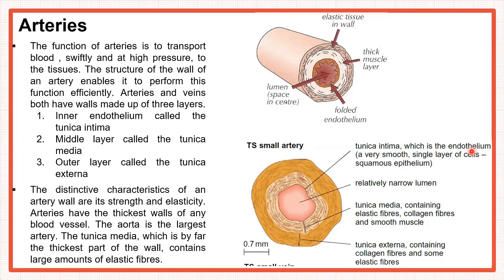The main function of an artery is to transport oxygenated blood very swiftly and under high pressure to the tissues. The structure of the wall enables it to perform this function efficiently. All blood vessel walls are made up of three layers. The innermost layer is the endothelium, known as tunica intima. The middle layer is the tunica media, which contains elastic fibres, collagen fibres, and smooth muscle.